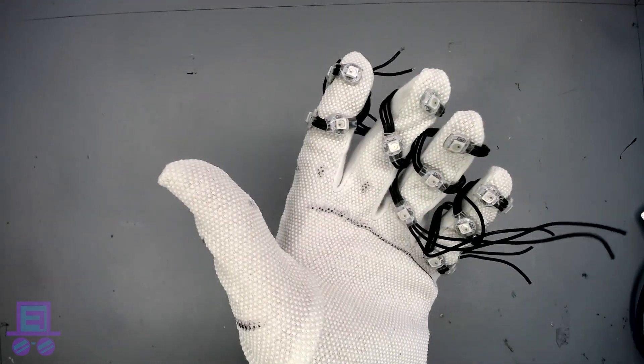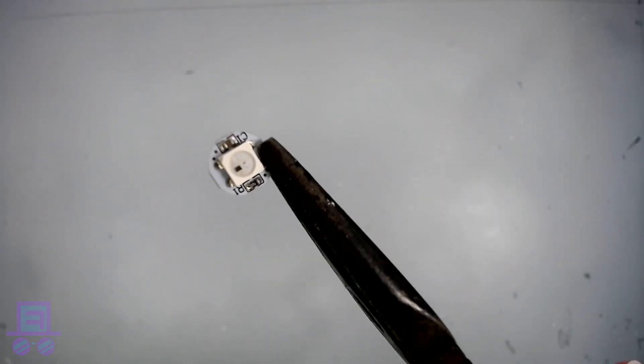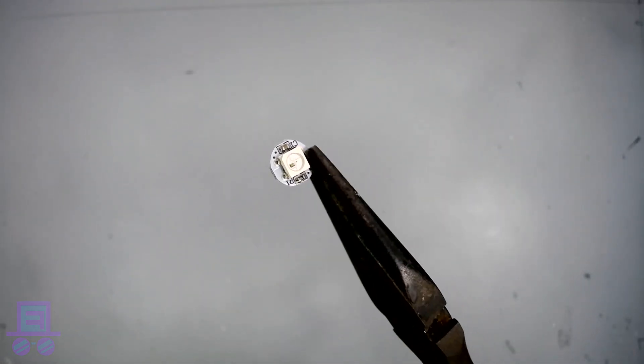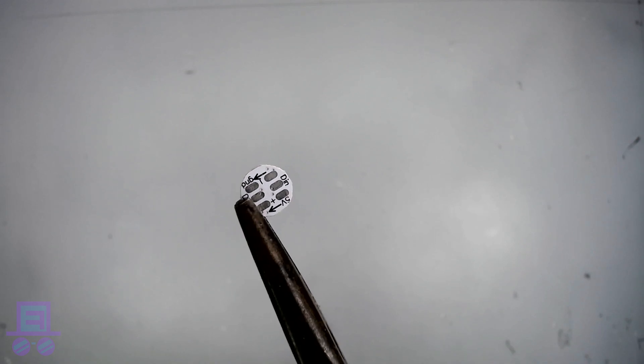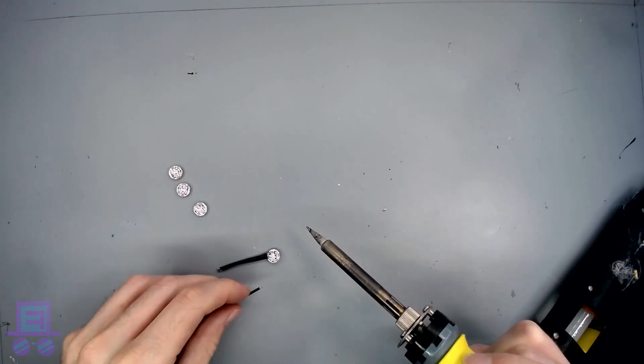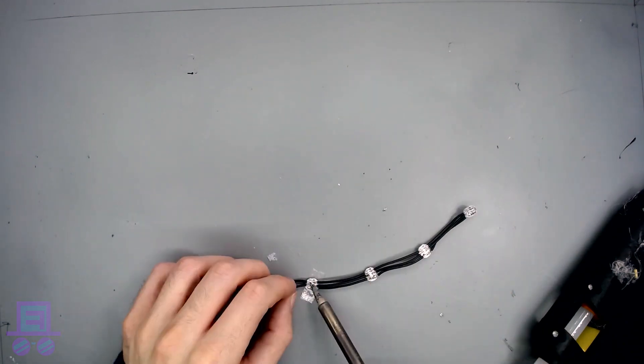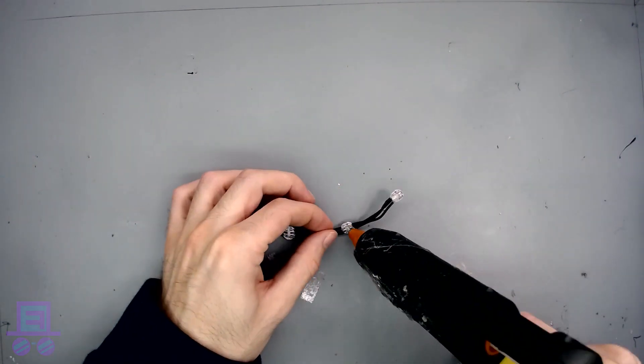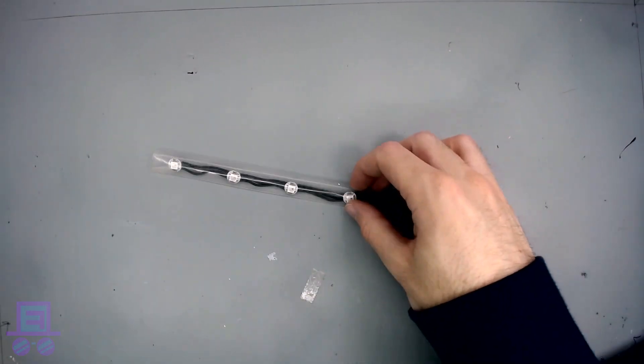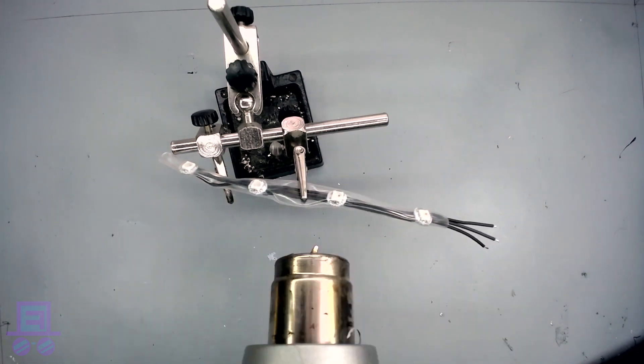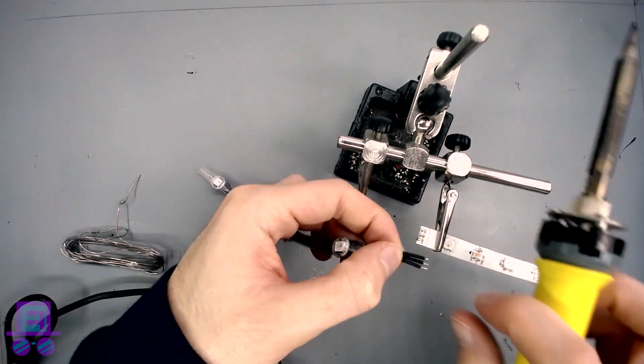These are the same LEDs found on the strips, but mounted on a small circuit board instead. We can use the pads on the rear to connect each LED to the next. Once we've done this, place a dollop of hot glue on the back and cover with heat shrink tubing. This will keep the LEDs stiff whilst allowing the wires to flex. We can even mix and match strips and lily pads if we want.